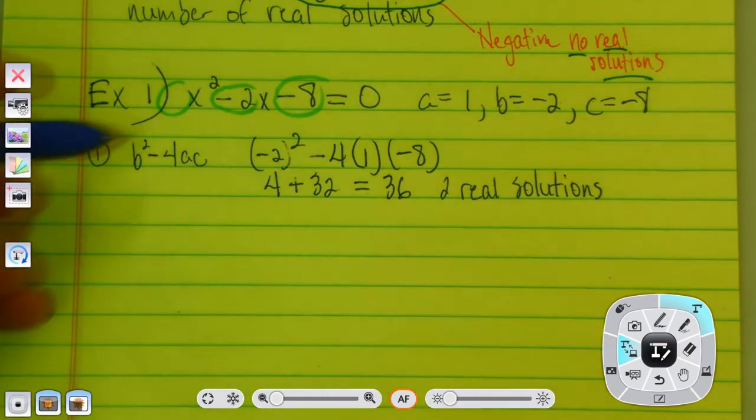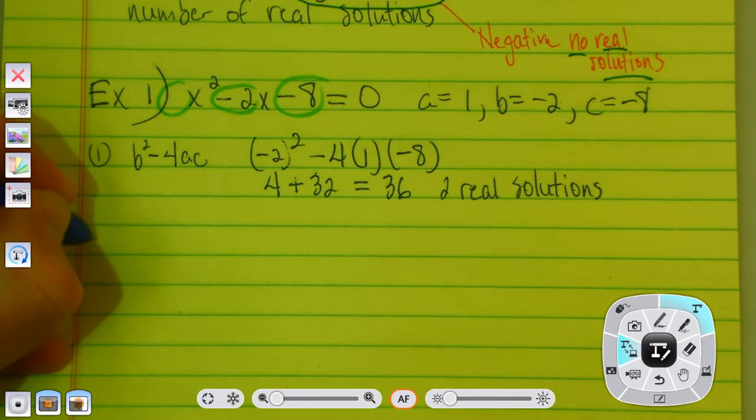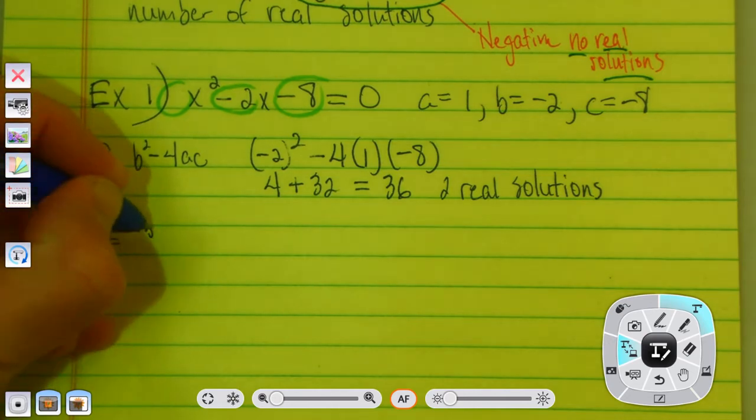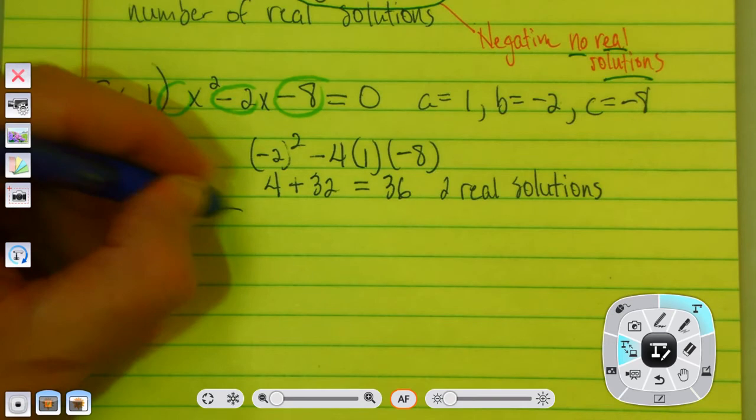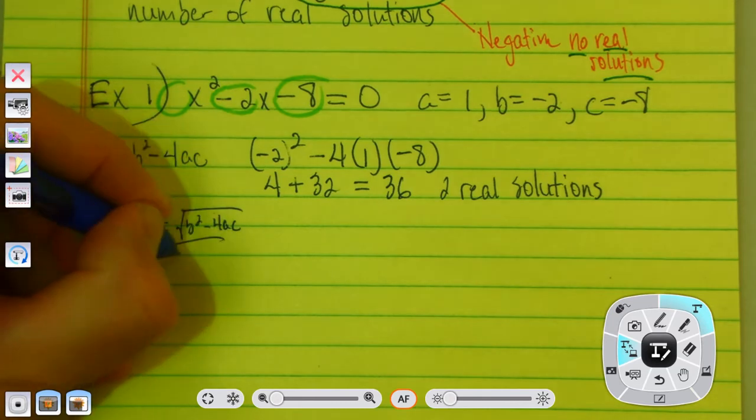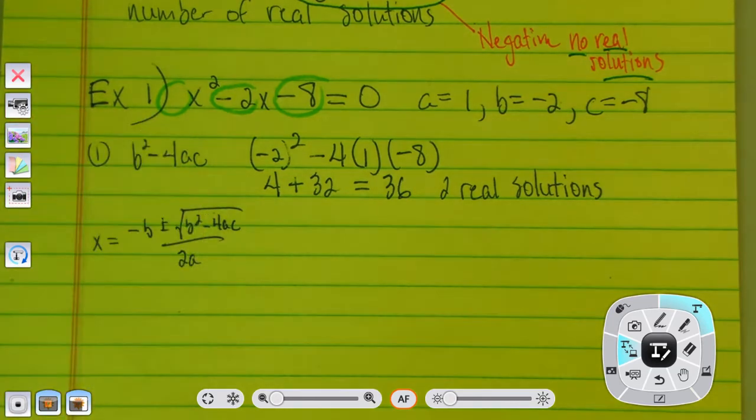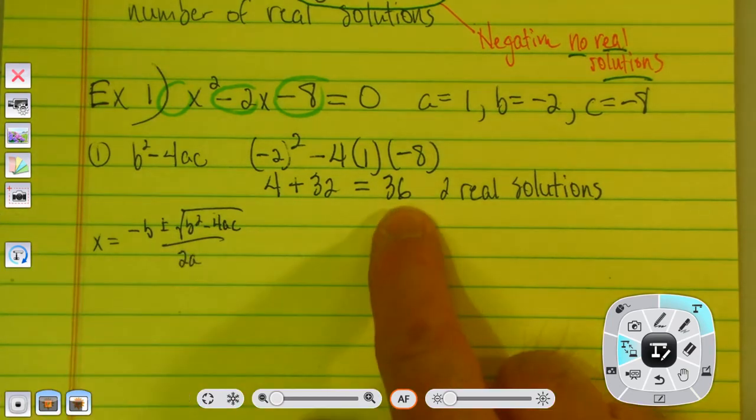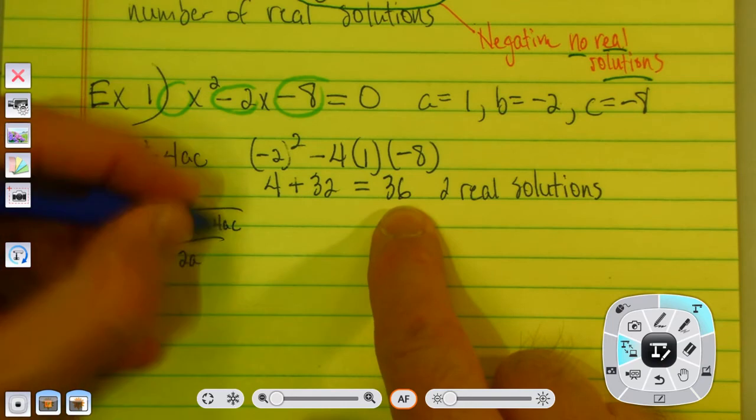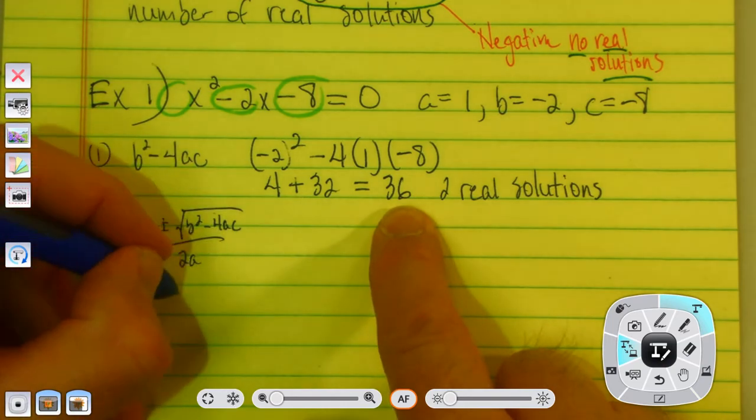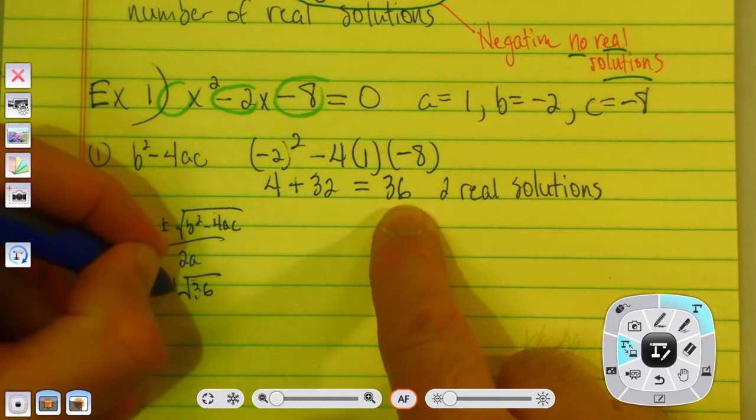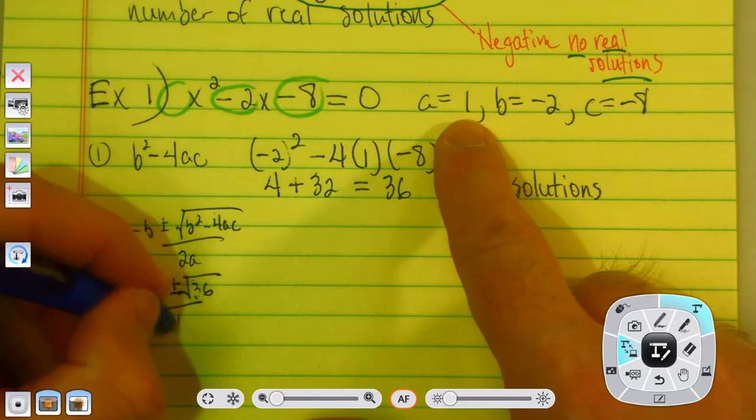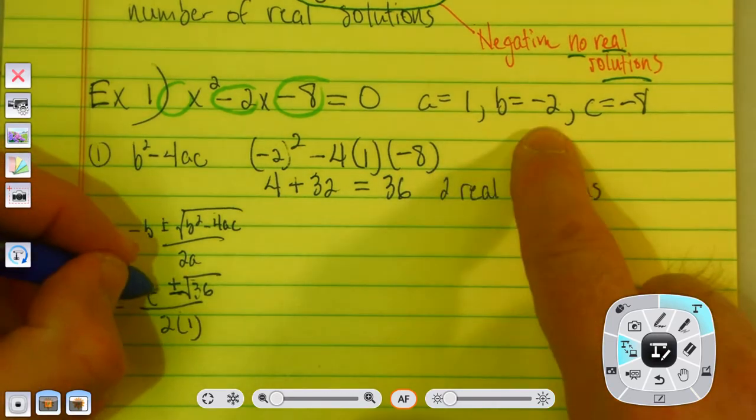So, I'm going to take the discriminant. Remember, the quadratic formula is x equals negative b plus or minus the discriminant, which is the square root of b squared minus 4ac all over 2a. Okay, so all I'm going to do, since I've already done this b squared minus 4ac part, I found that to be 36. I'm just going to put it in underneath the radical. So, it'll be radical 36. Remember, it'll be plus or minus radical 36 over 2 times. Remember, a is 1, 2 times 1. And negative b.